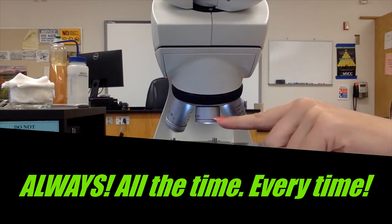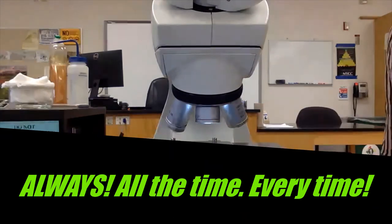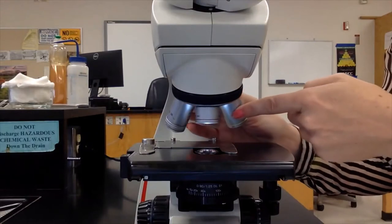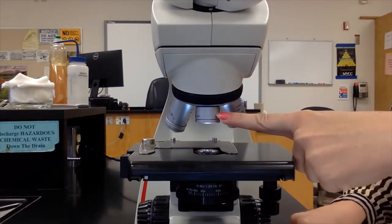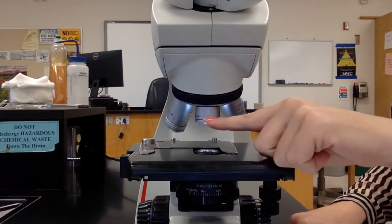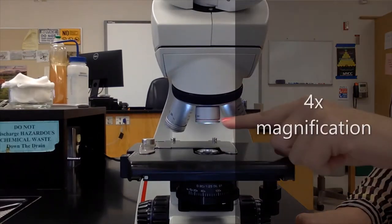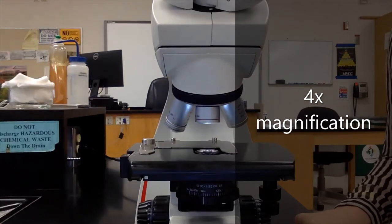You will always start with the scanning objective lens. That's this one here that has the red band. If you look at the barrel of the lens, it tells you that it has a four times magnification.